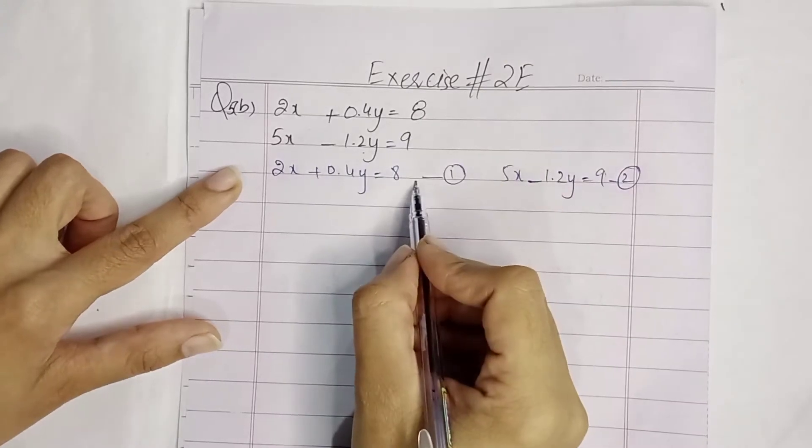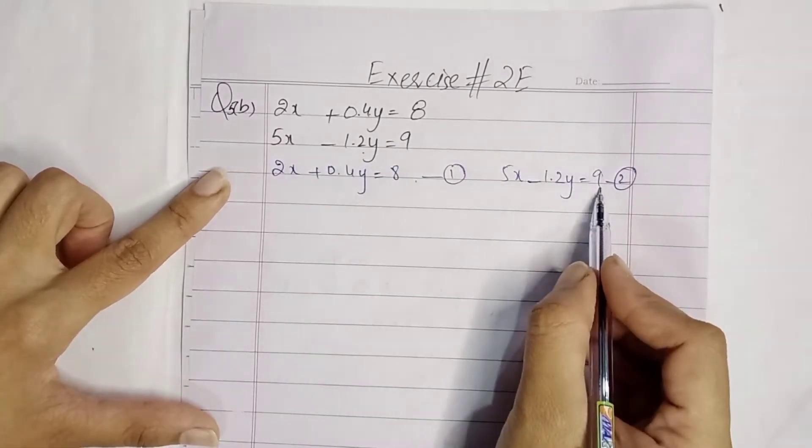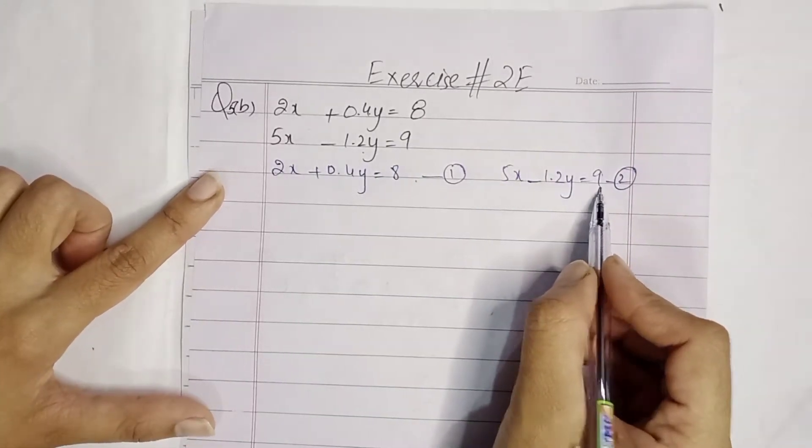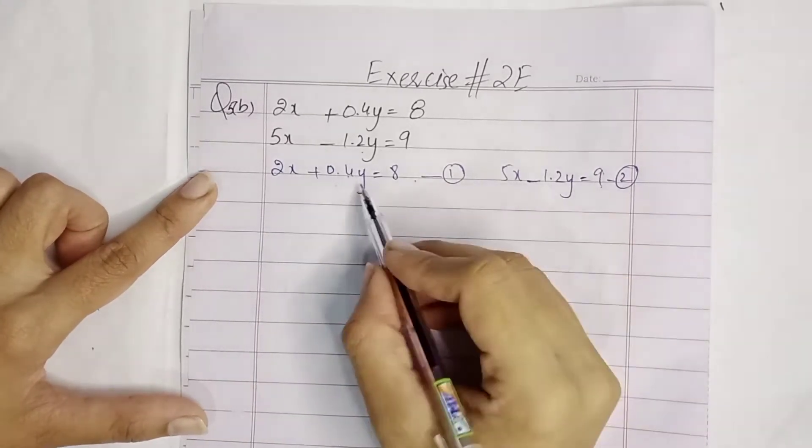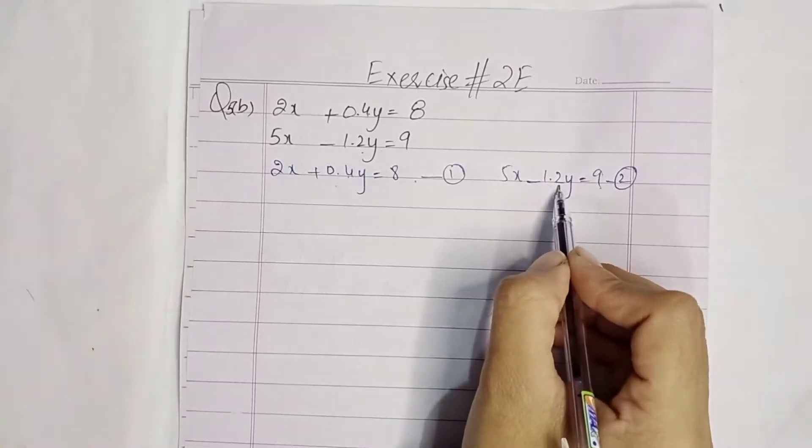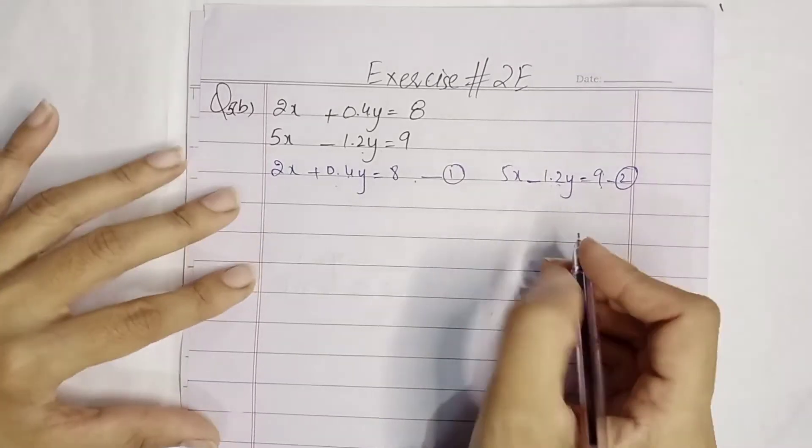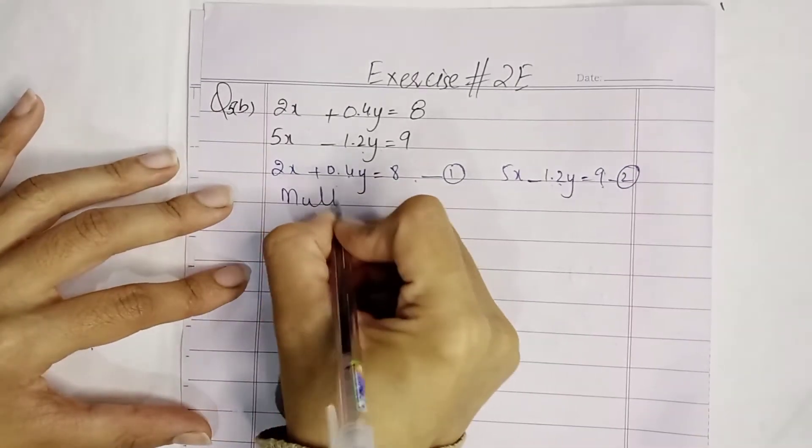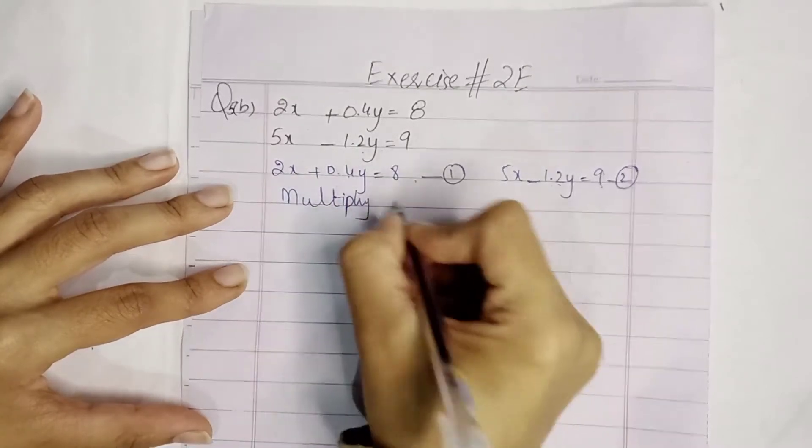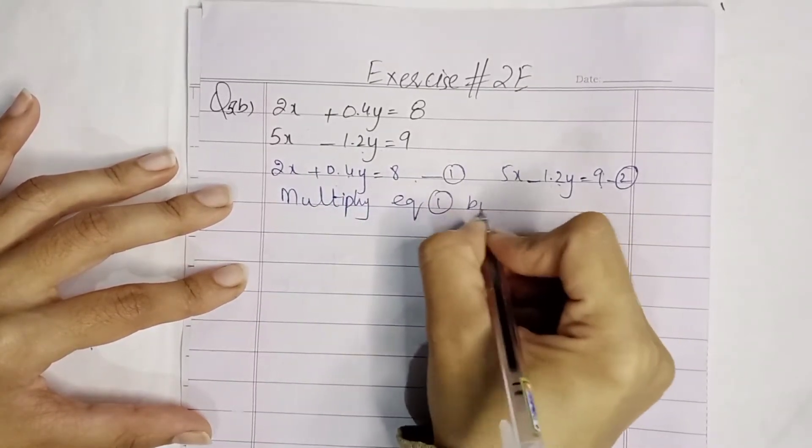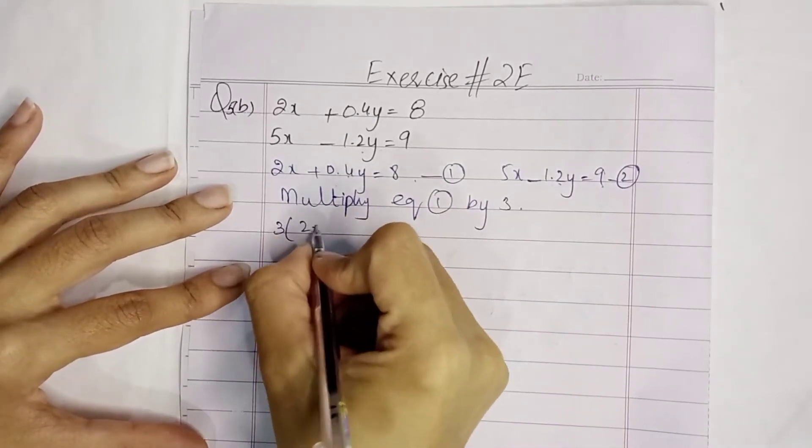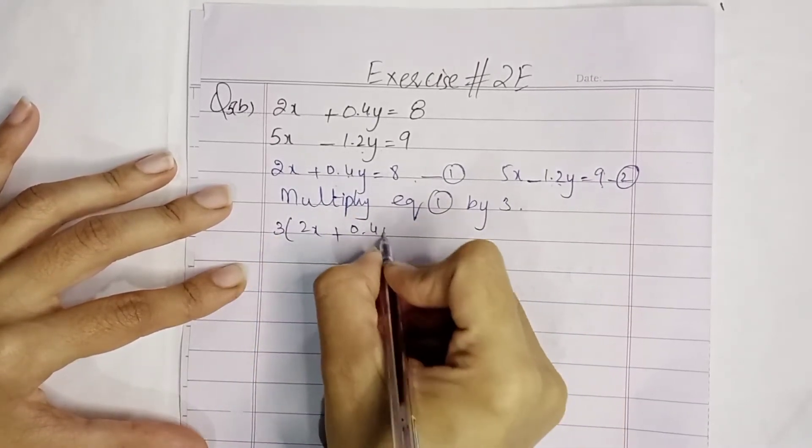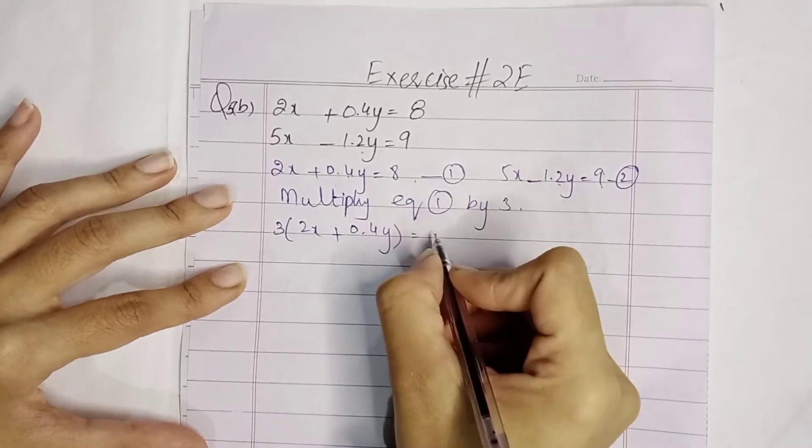This is the first equation, and this is equation number 2. Now if we multiply the first one by 3, the coefficients will be equal and we can easily eliminate. We will multiply equation 1 by 3.